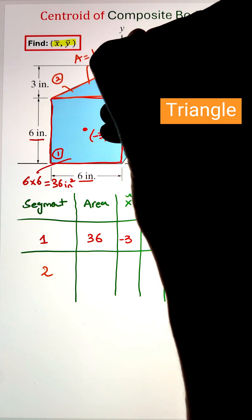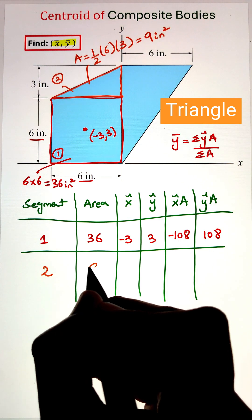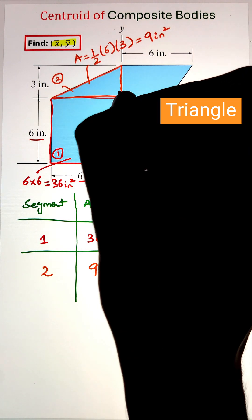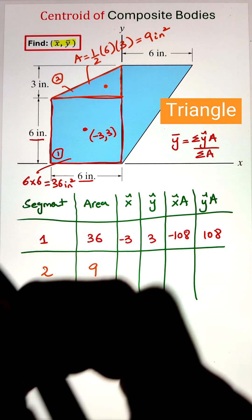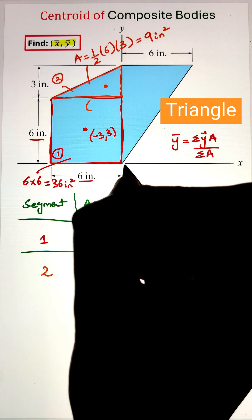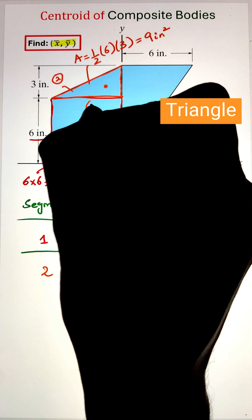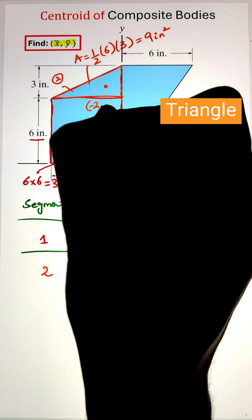Next, the centroid of the triangle is one-third from the higher end of the right angle triangle. So along the x-axis, that will be one-third of the 6 inches that we have. Since it is in the negative x direction, that value will be -2.